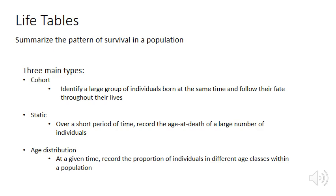The first type, and probably the most effective, is a cohort life table. This is where we identify a large group of individuals born at the same time and follow their fate throughout their lives. For example, we could take a thousand butterfly eggs and follow them through all their caterpillar instars, through pupation to adulthood, and look at mortality at all of those different stages. This is good because we can directly look at causes and proportions of mortality in all these different stages.